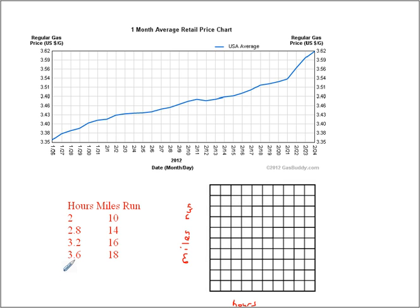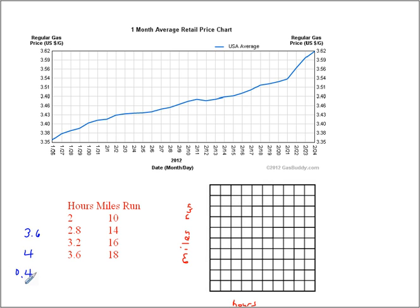Now I need to look at the data set and figure out how to break it down into intervals. For hours, I start at 2 and go to 3.6. I'd like to graph from 0 so I can see the pattern if I ran for one hour. Since 3.6 is close to 4, if I divide by 10, each interval is 0.4 — which works out well since all the data values are multiples of 0.4.